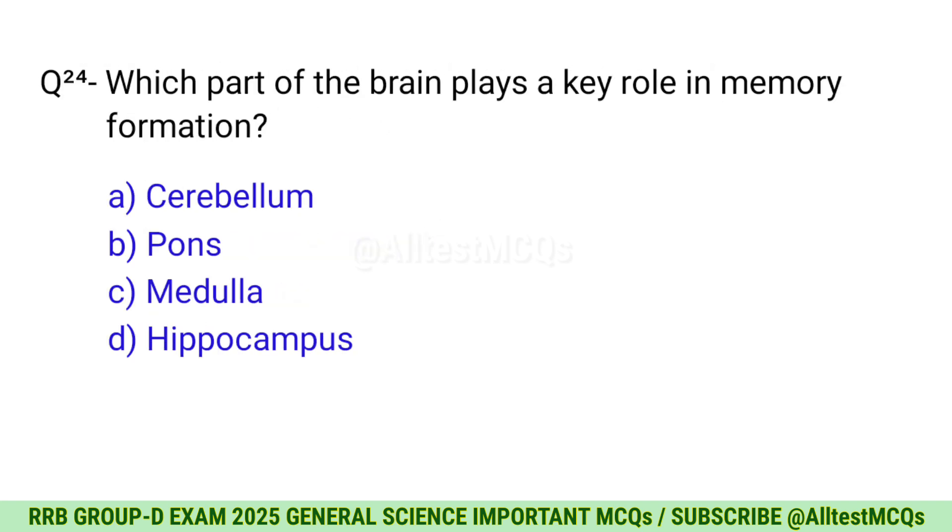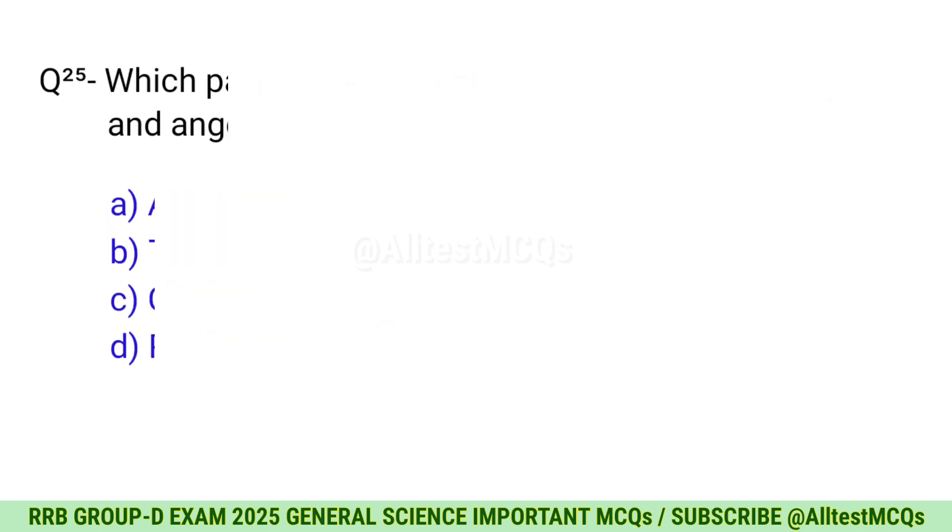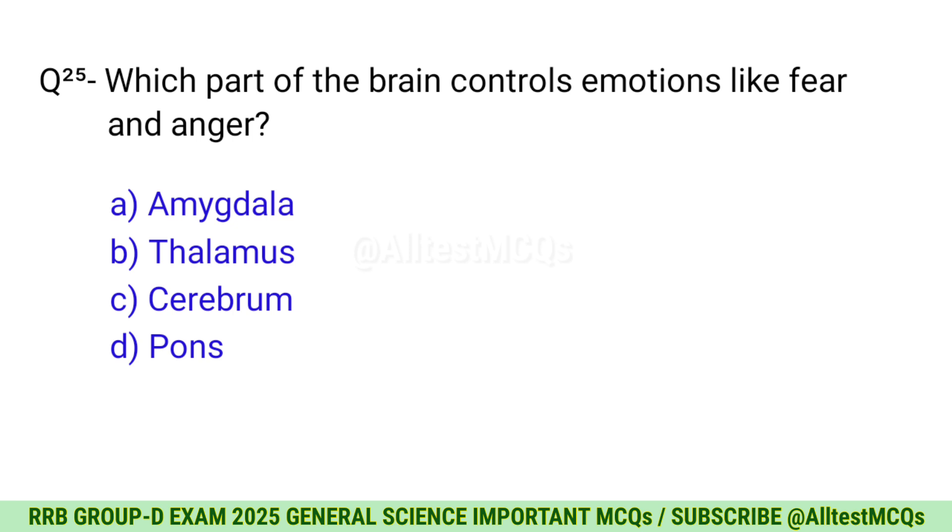Question 24: Which part of the brain plays a key role in memory formation? Right option is D, Hippocampus. Question 25: Which part of the brain controls emotions like fear and anger? Correct option is A, Amygdala.